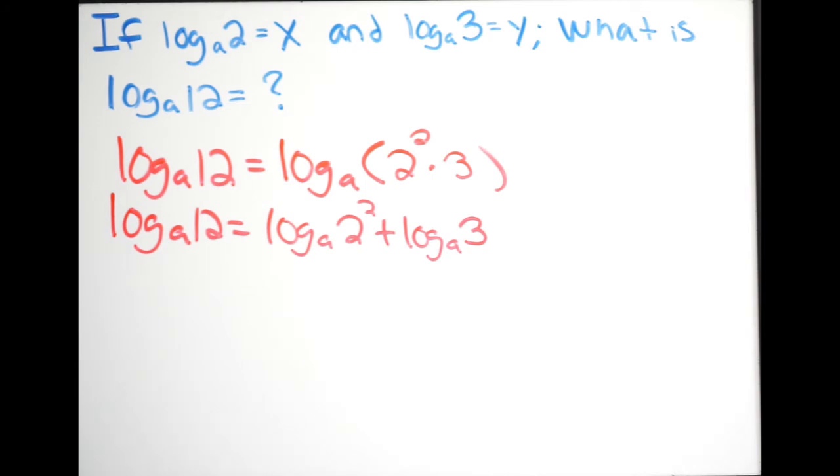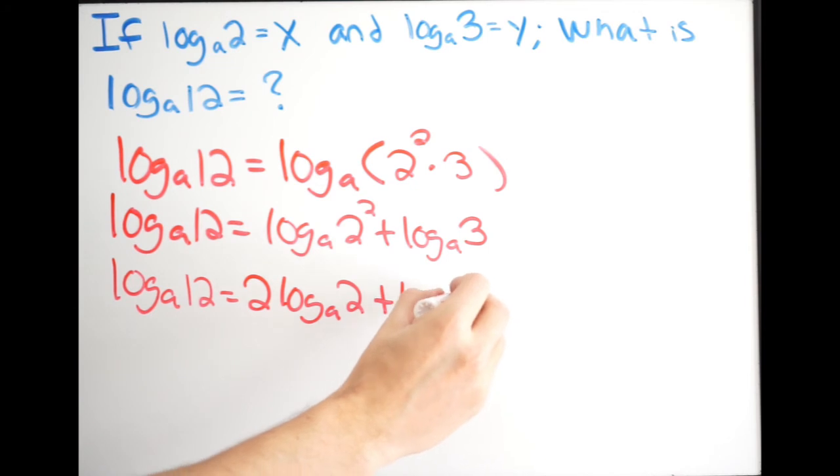Now I have to go ahead and use my power property. So I can see that I have a power and using our power property when dealing with logs, we know that we can rewrite this out in front. So for example, log base a of 12 equal to, re-write it out in front, you get 2 log base a of 2 plus log base a of 3.